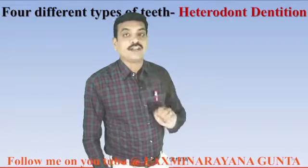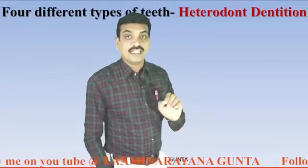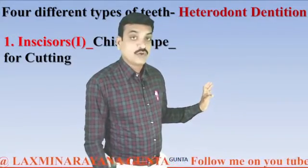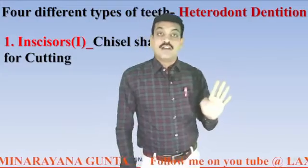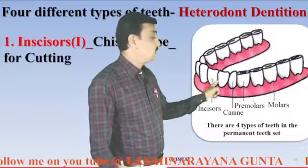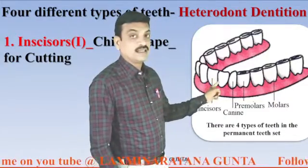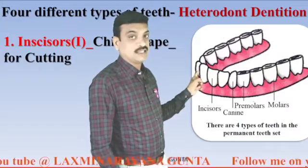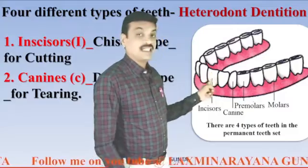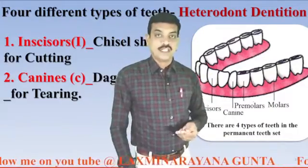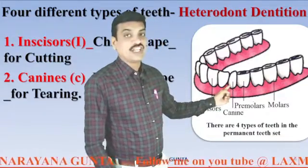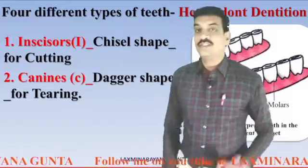There are four different types of teeth in humans, that's why human teeth are called heterodont. The four types are: incisors, canines, premolars, and molars. Incisors are chisel-shaped and are meant for cutting. Canines are dagger-shaped and are meant for tearing.